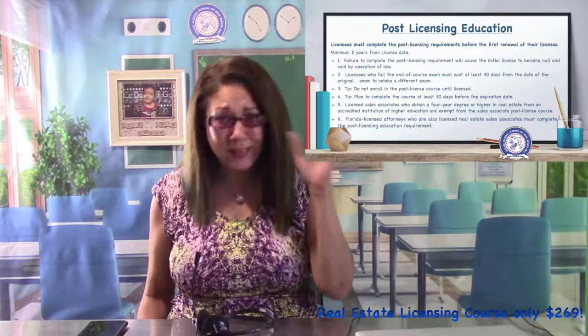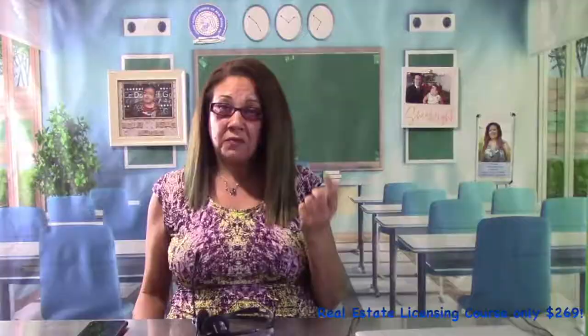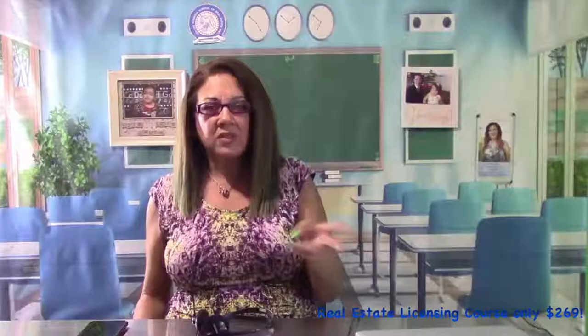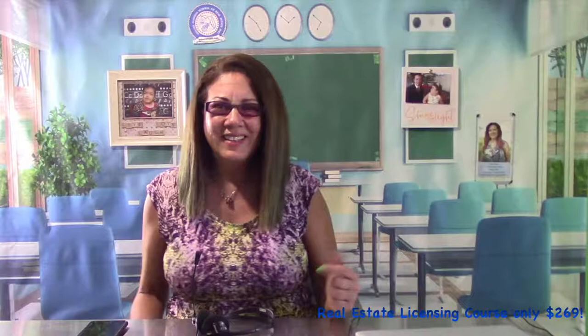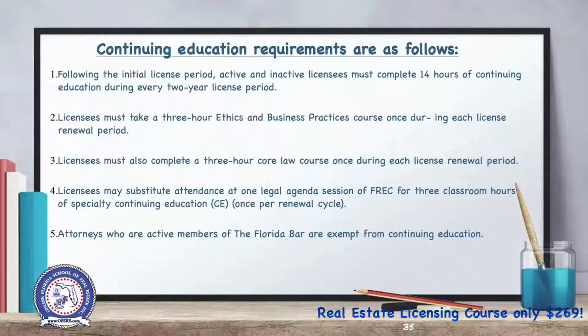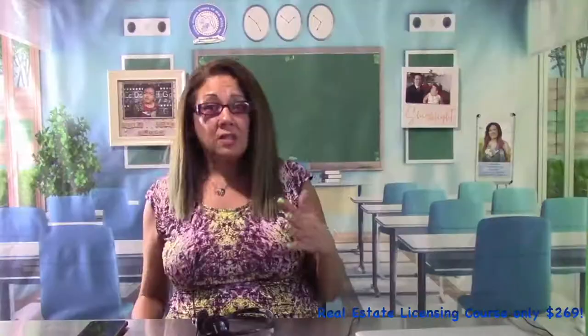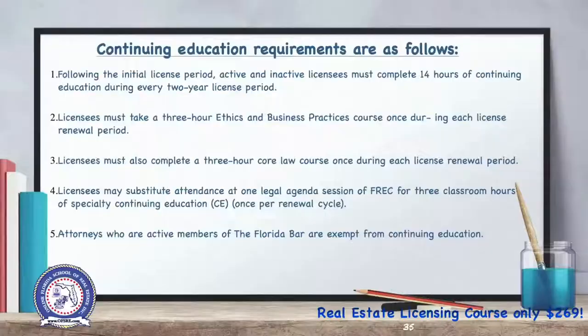Upon completion of the post-licensing education requirement during the initial license period, active and inactive licensees must complete a 14-hour continuing education course during every two-year period that follows. After the 45-hour post-licensing course, you do 14 hours every two years for as long as you hold your license. The continuing education requirement must include three hours of core law to update real estate rules and statutes, and another three hours devoted to ethics and business practices.